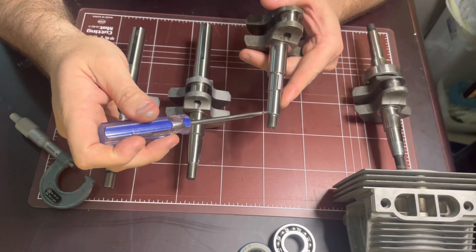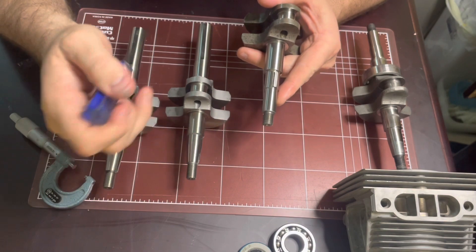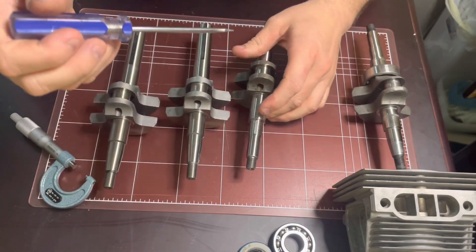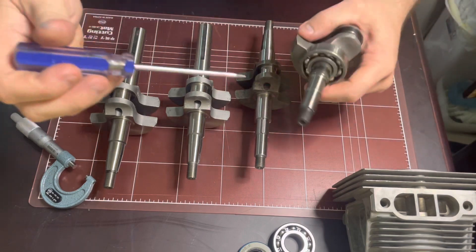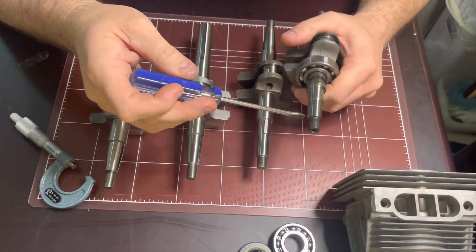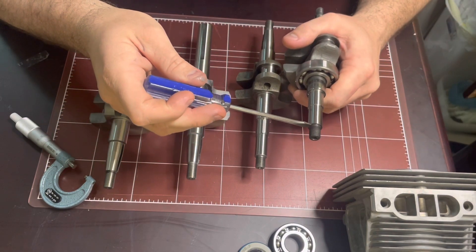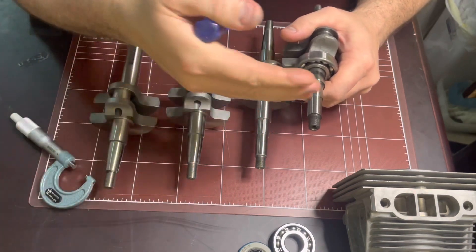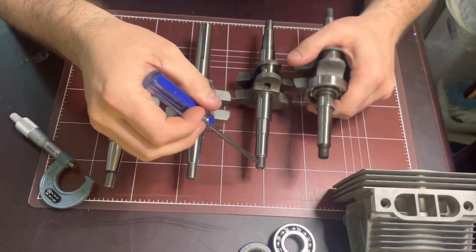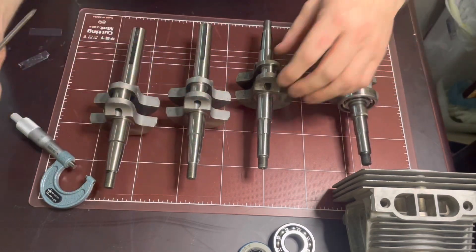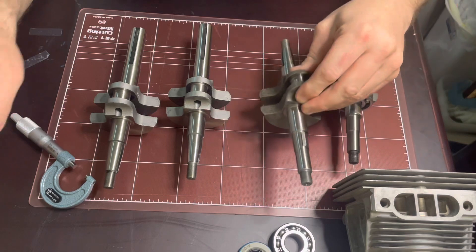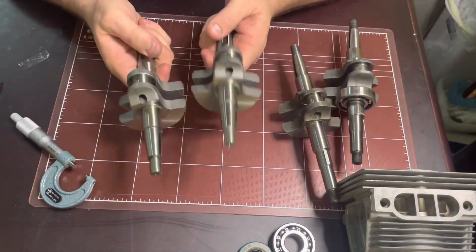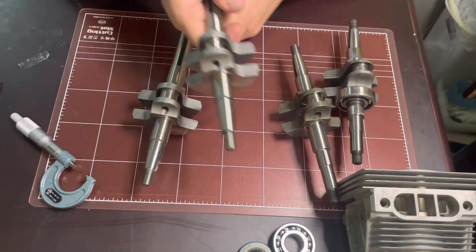You can tell by this little chamfer, I believe is how you would describe that, at the back of the threads. This West Bend or Chrysler one doesn't have that chamfer - it's not recessed at the back of the threads like this US motor power one.